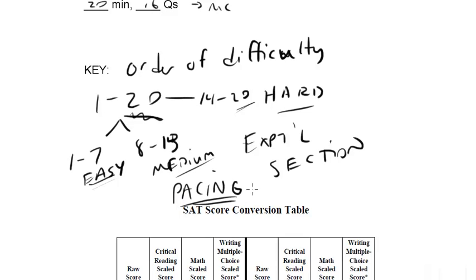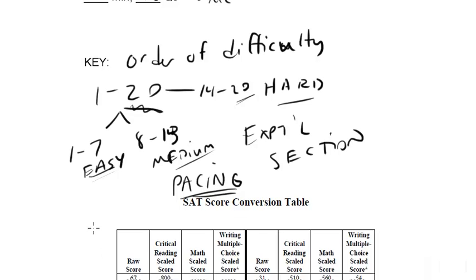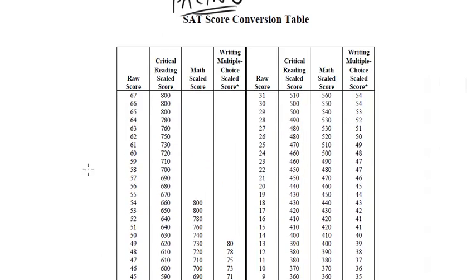I'm going to talk much more about pacing in video four in terms of the specifics, how many questions to do in each section, how many to omit. But for now, I just want to mention that getting a good score in the math section is not like high school where you have to try to answer every single question. Let's say, for instance, you were shooting for the average 500. There are a total of 49 questions in the math section. You only have to get 24. That's less than half.